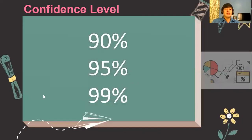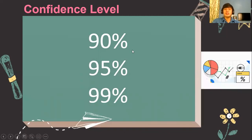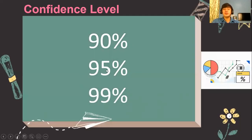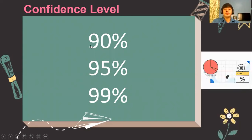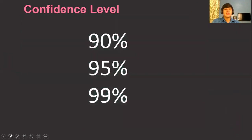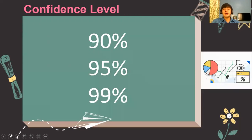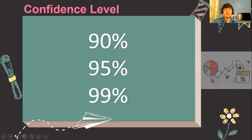We have three confidence levels used in research: 90%, 95%, and 99%. For social sciences, we usually use 95%. In scientific research, we use both 95% and 99%. We seldom use the 90% confidence level. In the z-table, we also have other types of confidence levels, but the most frequently used are 95% and 99%.